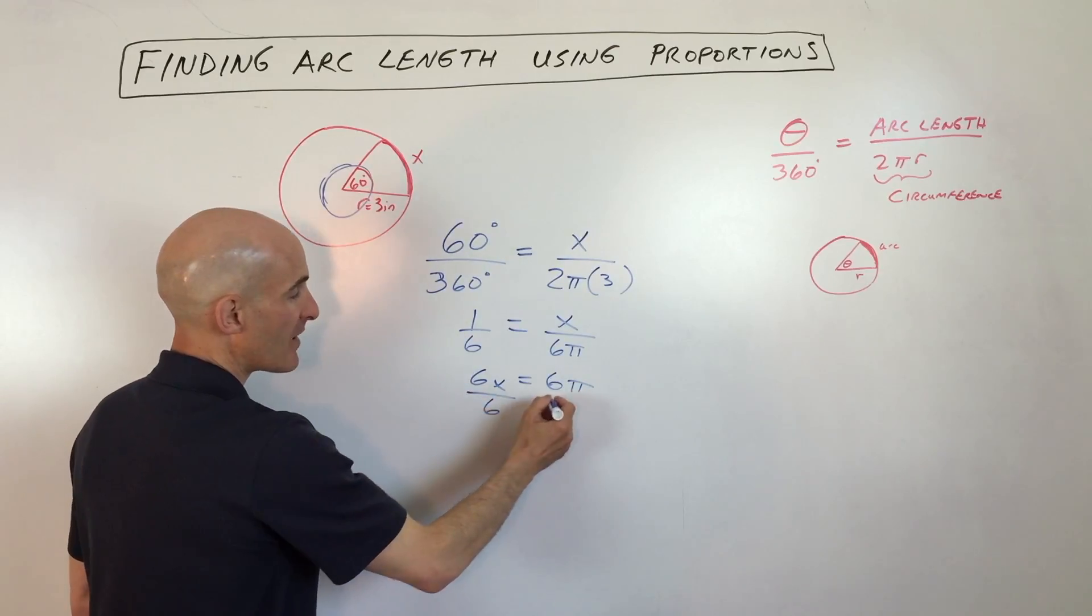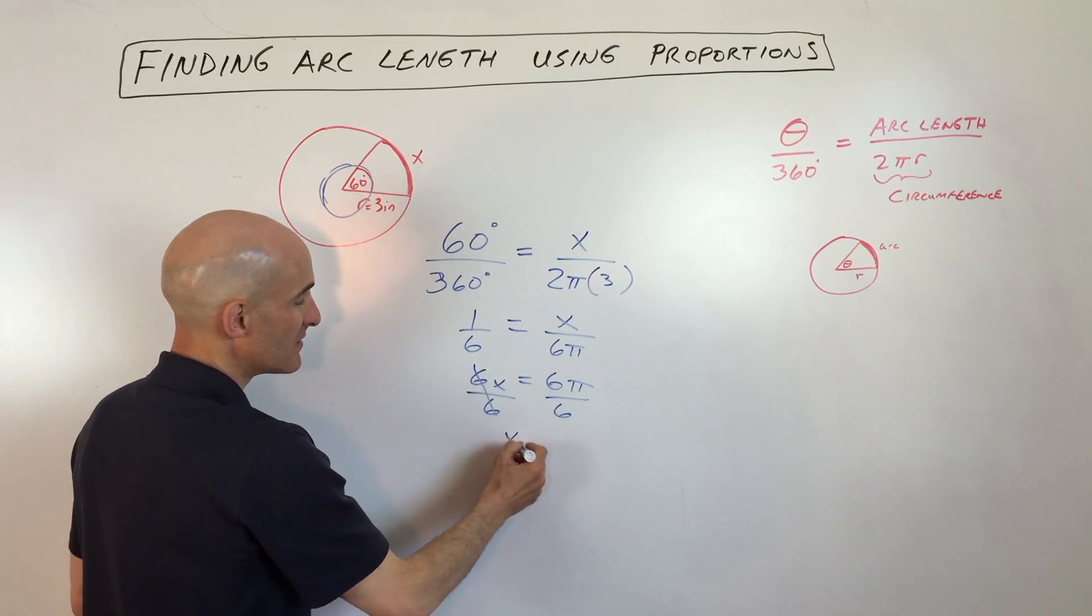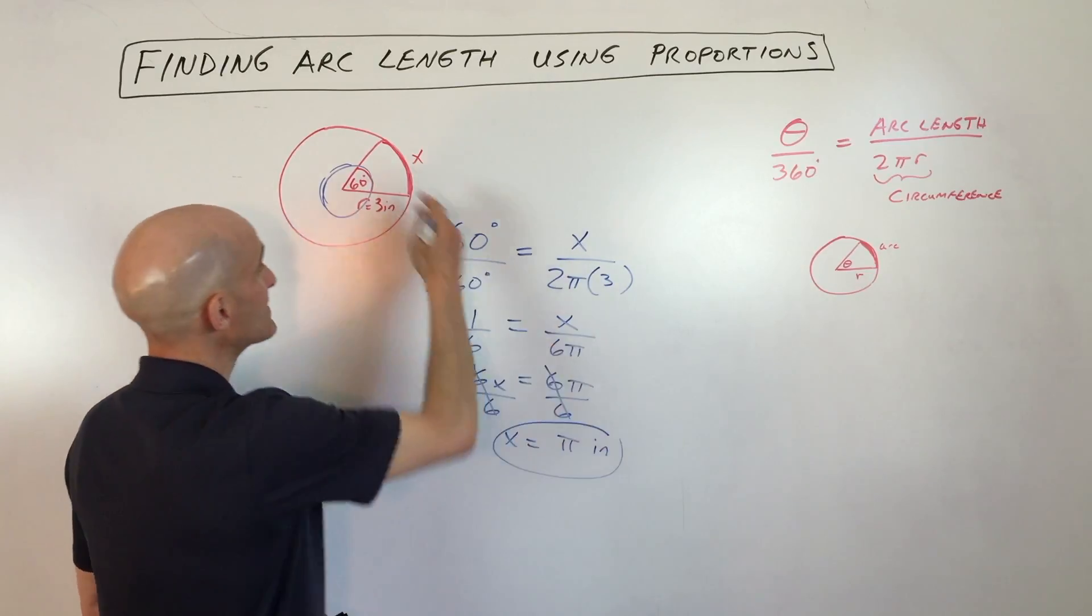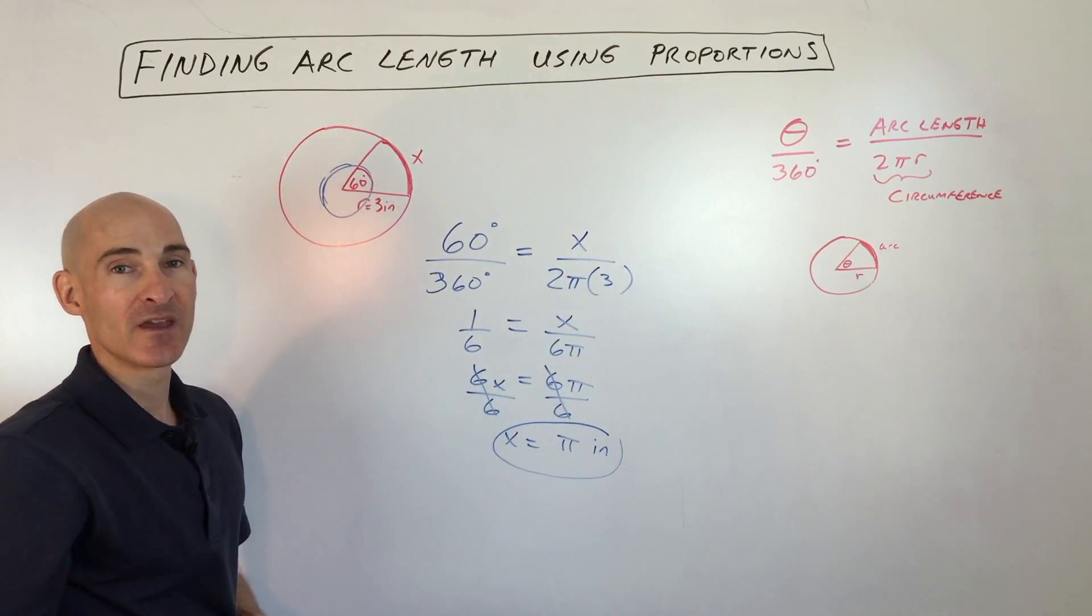and if we divide by 6, you can see that x equals π inches, and that's the length of that arc.